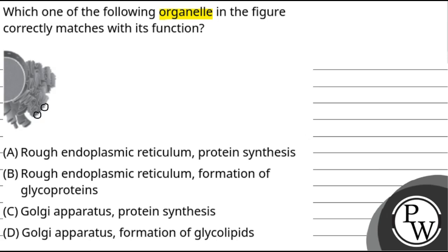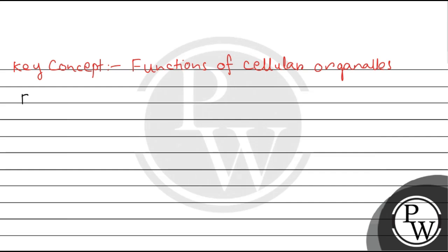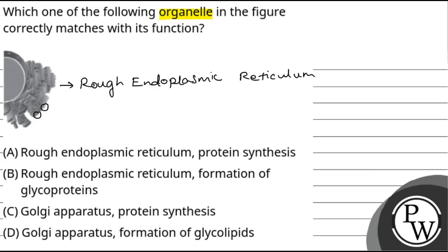The structures visible on it are ribosomes. So our figure is the rough endoplasmic reticulum — this figure is RER.